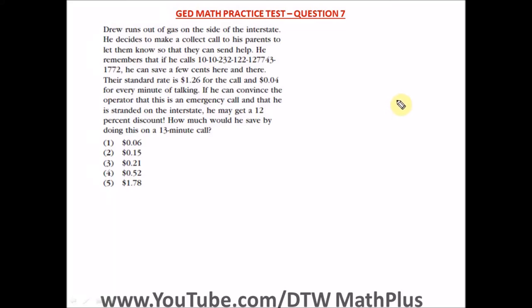Question seven of the GED math practice test, part one with calculator. Drew runs out of gas on the side of the interstate. He decides to make a collect call to his parents to let them know so they can send help. He remembers that if he calls this particular number, he can save a few cents here and there.